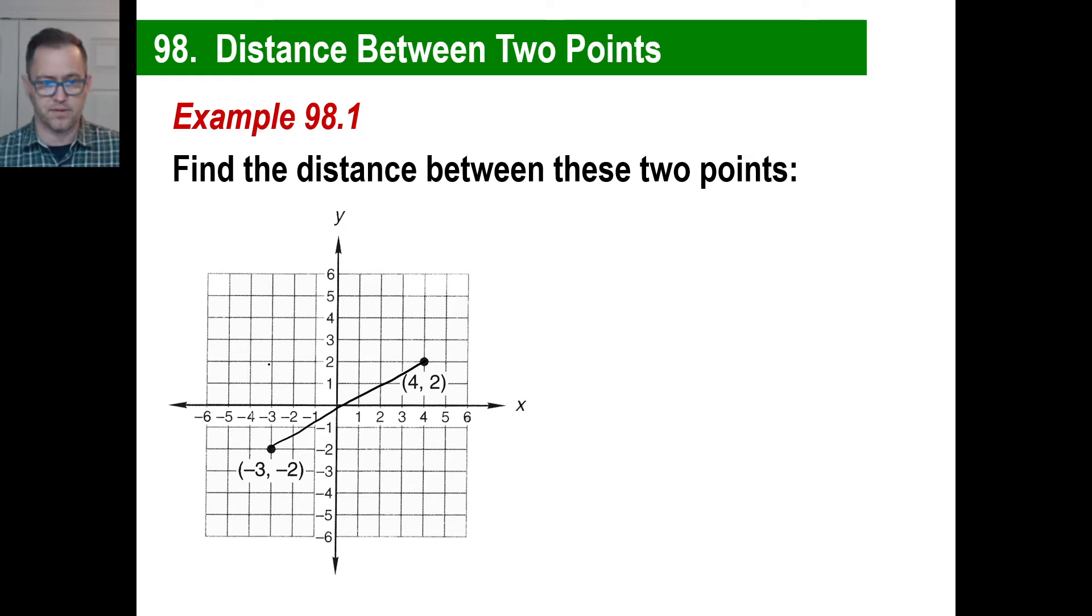So what we're going to have to do is actually create a right triangle and use the Pythagorean Theorem to find out what the distance is. And you can make a triangle like this, or you can go like this. It doesn't matter. From here to here, we're going to have to use the Pythagorean Theorem.